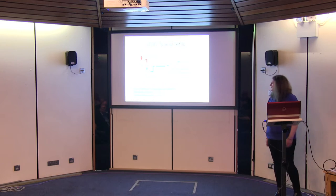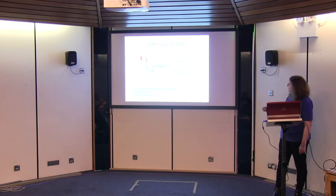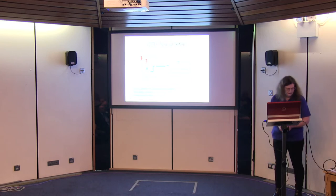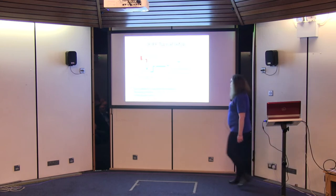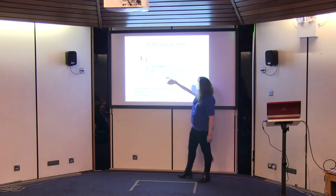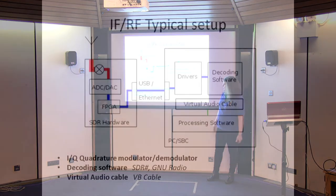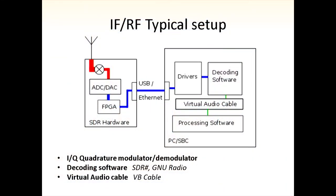But for most of us, we want to worry about IF and RF. In a typical system you've got a PC or small board computer, usually an FPGA, ADCs and DACs, some sort of high-speed interconnect, drivers and decoding software, and then something to do some processing. Key takeaways: the IQ modulator and demodulator — we'll talk about that in a minute — decoding software like SDR-sharp, and virtual cables, which mean you can route all the audio around inside your PC.